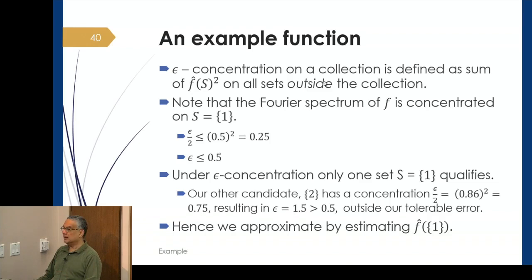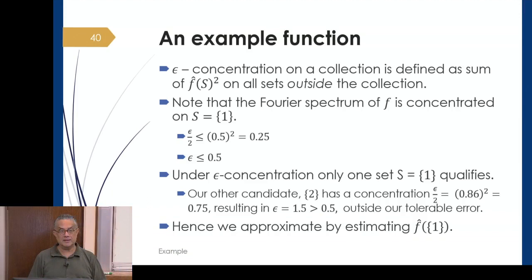We talked about the concept of ε-concentration on a collection of Fourier coefficients. For a given set, the definition of ε-concentration talked about the sums of f̂(s)² on sets outside the collection of interest. If you're an important set and ε-concentrated, the definition says sum the squares of coefficients outside that set, and the sum should be ≤ε. So if you're an important set, everybody else should sum to ≤ε.